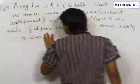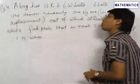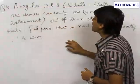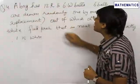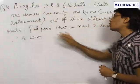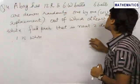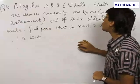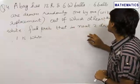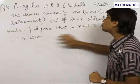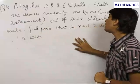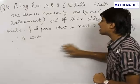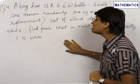This is a very important and conceptual problem. We have a bag with 12 red and 6 white balls. 6 balls are drawn randomly one by one without replacement from this bag, and we found that out of these 6 balls, at least 4 are white. We need to find the probability that in the next 2 draws, exactly one of the balls is white.